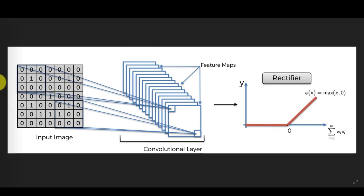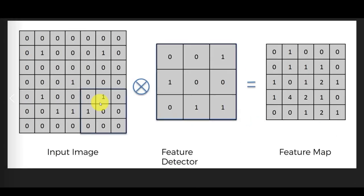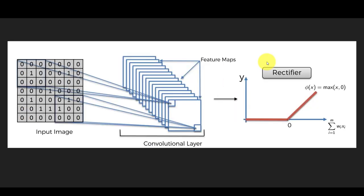We'll have multiple feature detectors with different filter values, so that every feature of the image gets recorded. For example, a cat has pointy ears while a dog has floppy ears, and the cat is smaller — all these features get captured in the feature maps. Multiple filters produce multiple convoluted images.